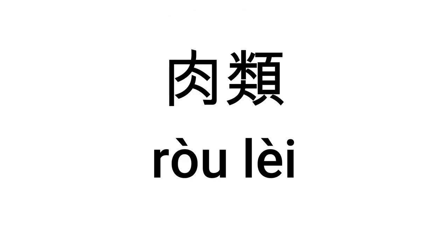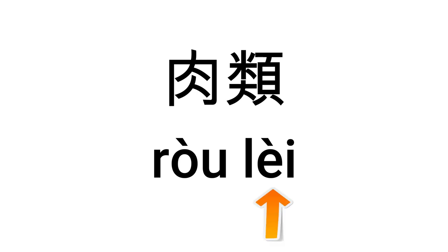肉类 — 肉 means meat. So if you're vegan or vegetarian, you try to avoid 肉. But if you like meat, you just look for this character. 类 means category, so 肉类 basically means the meat category.